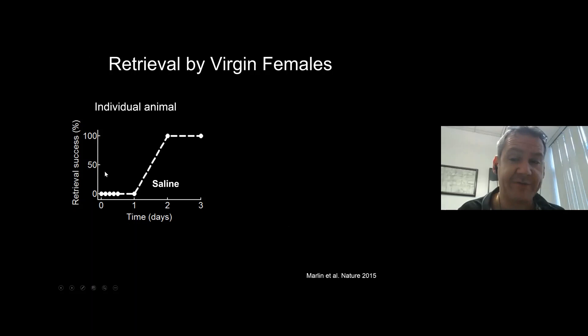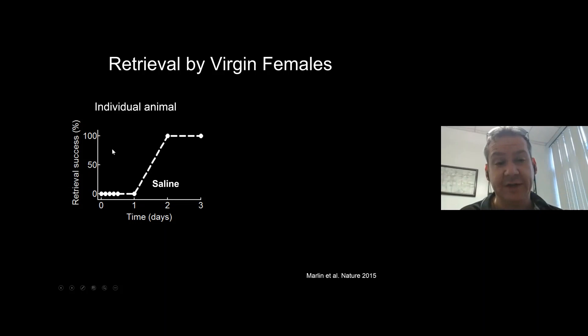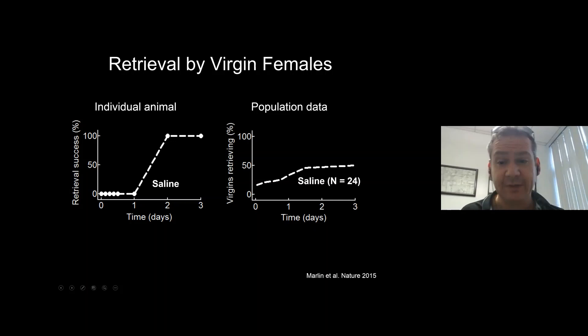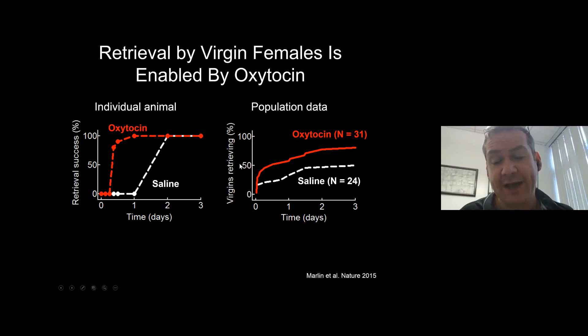Here's our assessment of pup retrieval in a co-housed virgin. Retrieval success is on the y-axis, tested over about half an hour at indicated time points. Time zero is the beginning of co-housing. She's been co-housed for three days with saline injections. Nothing happens for the first day — she's retrieving at zero percent — and then on day two, she's retrieving with 100% reliability. About half the animals begin retrieving over about a three-day period. An animal given systemic oxytocin retrieves at a much earlier time point; about 80% begin to retrieve over three days.